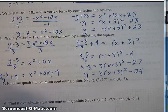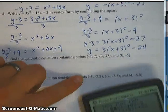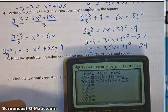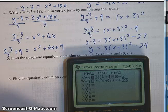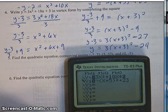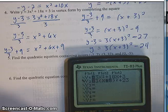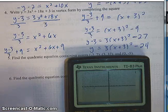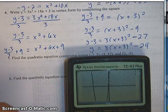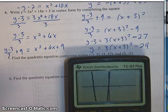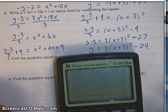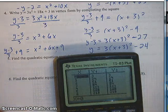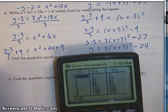You always want to feel good about what you've accomplished, so we should double check our answer in the calculator. In y1 type in the original: 3x squared plus 18x plus 3, and then we found 3 times x plus 3 squared minus 24 in vertex form. I'm just going to graph them and make sure it's the same graph — there's the first one and the second one. Another way, if you didn't want to graph it, just look at the table and check that the y values are the same.